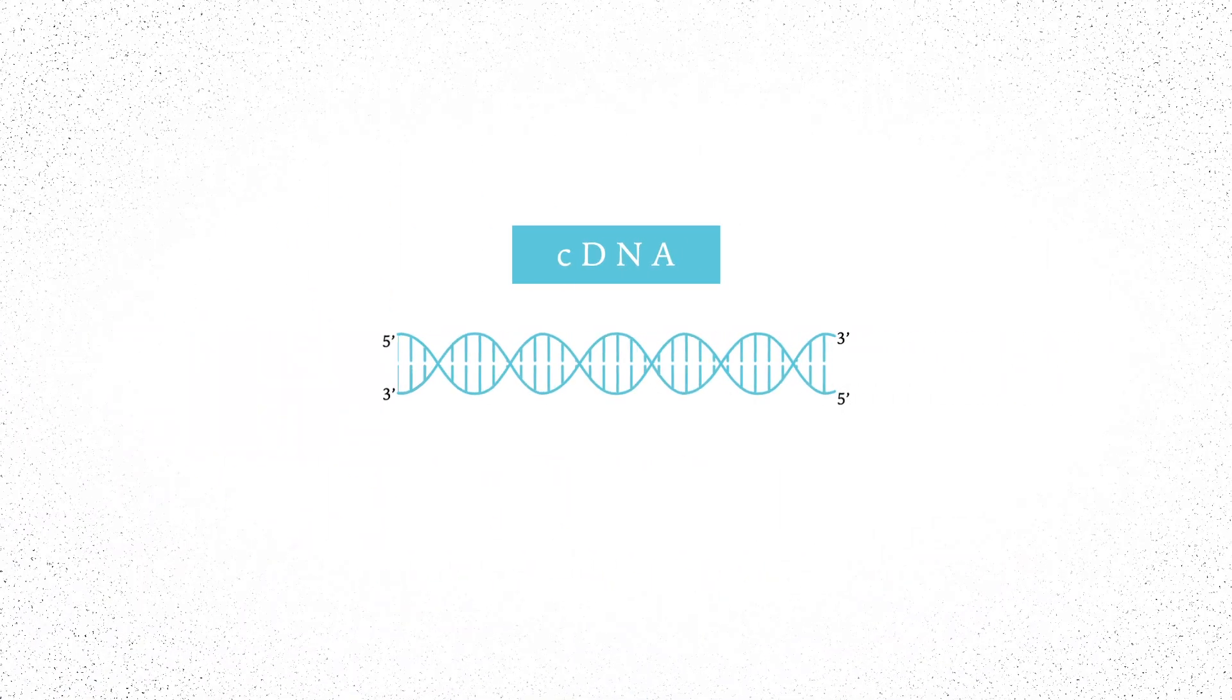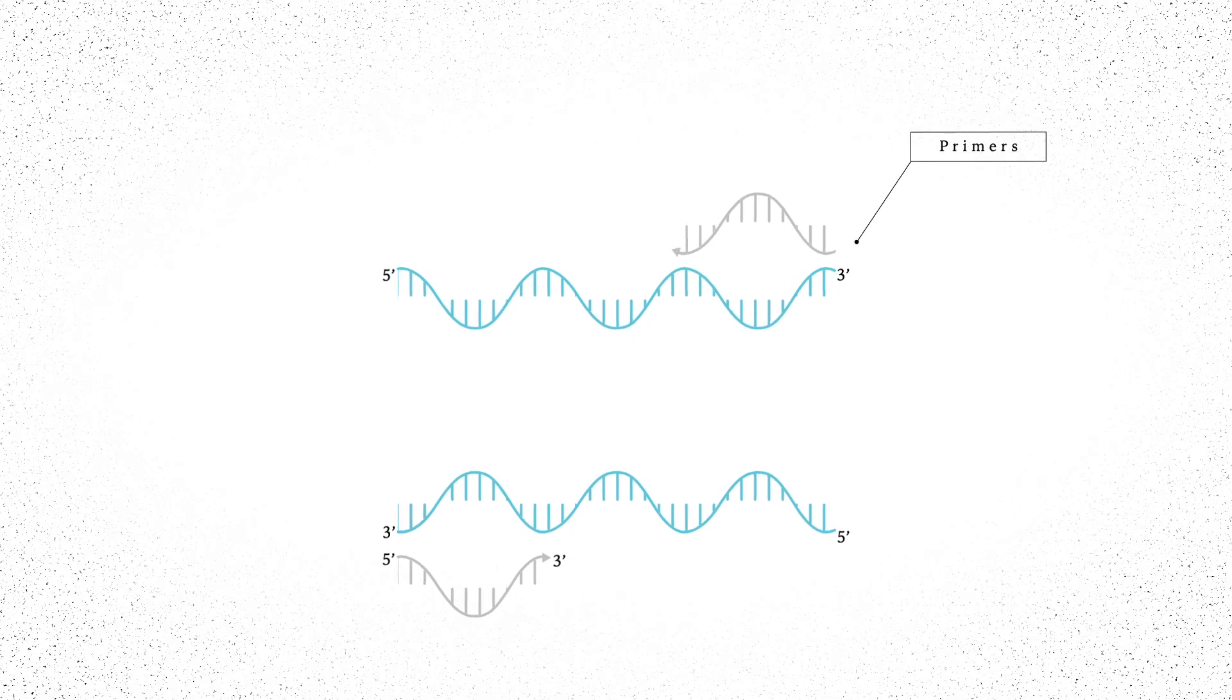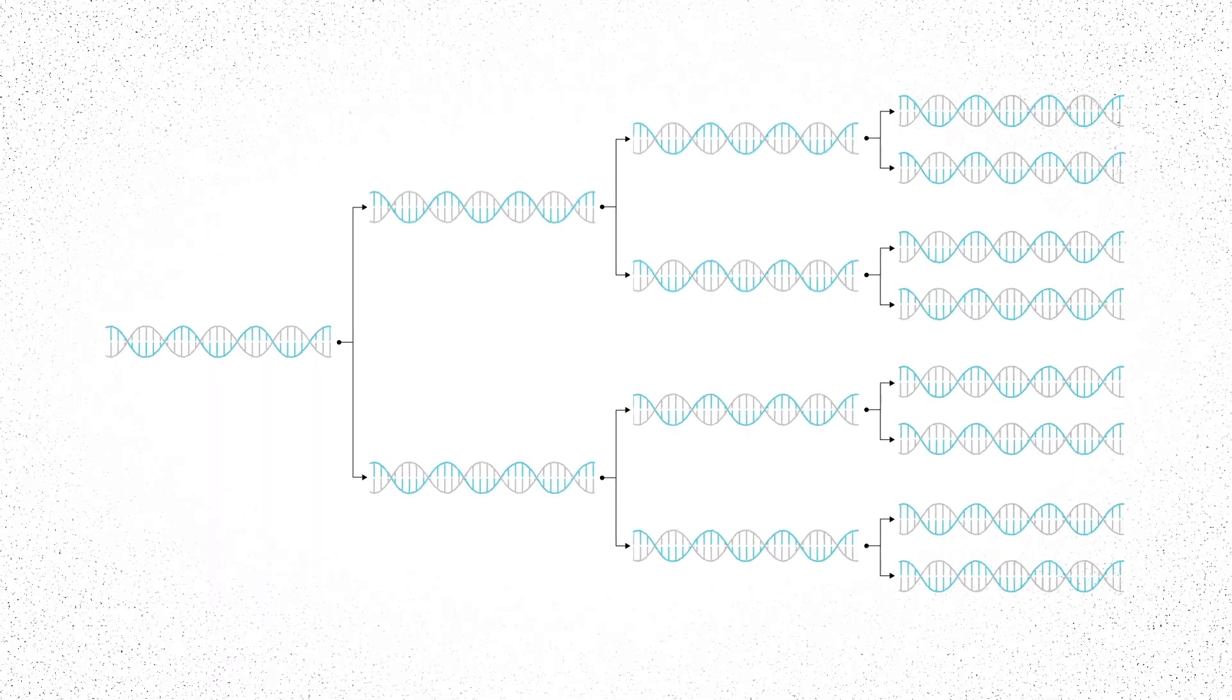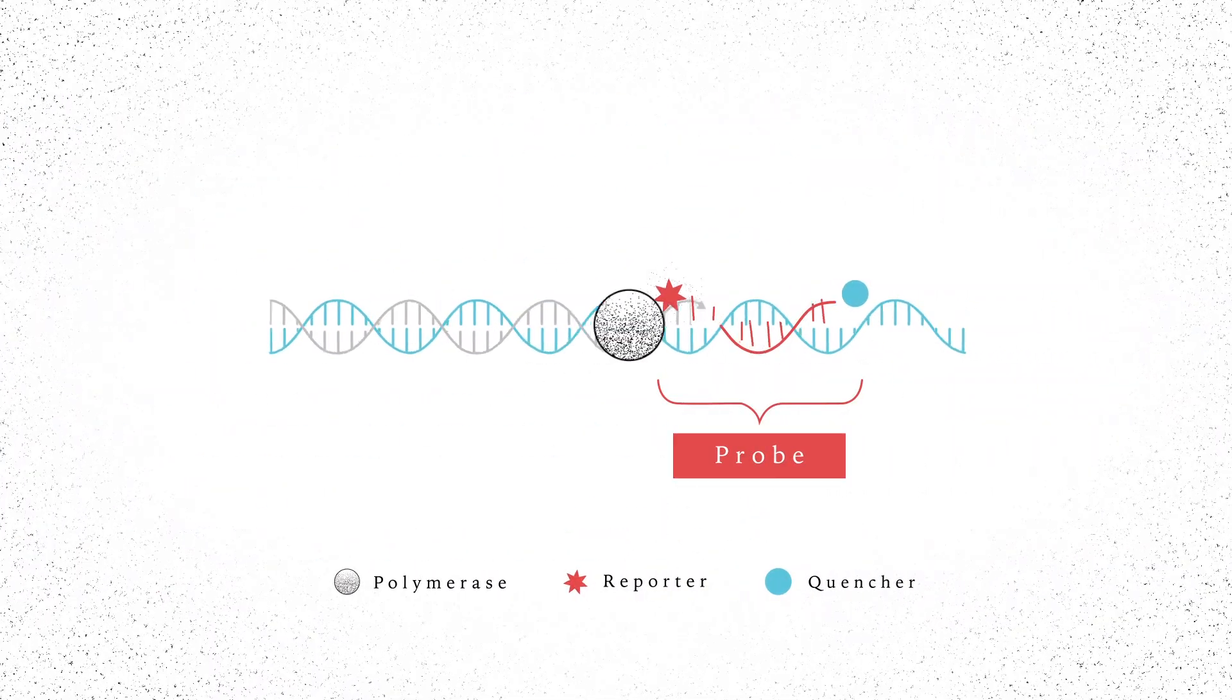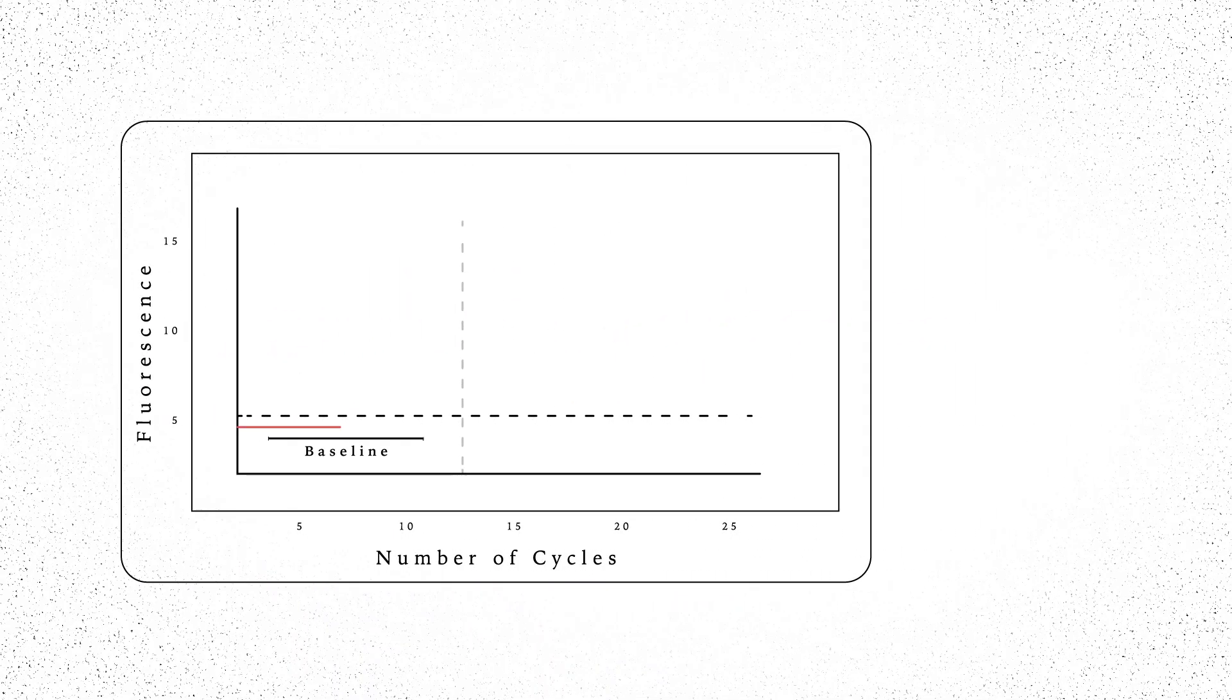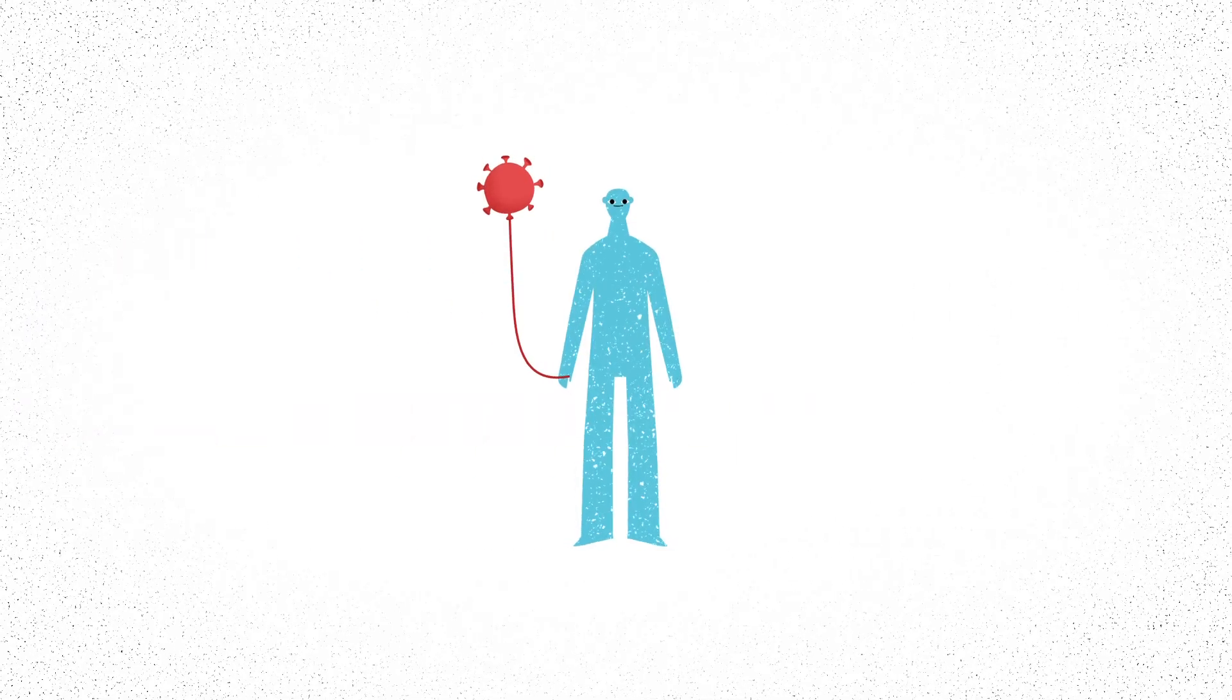If the virus is present in the sample, its unique regions of genetic code will be identified by complementary primers and copied by enzymes. One strand of DNA becomes hundreds of millions, which are detected using probes marked with fluorescent dye. If the PCR machine senses fluorescence, the sample has tested positive for the virus, meaning the individual is infected.